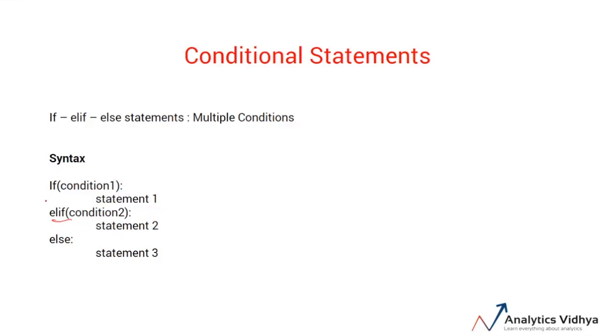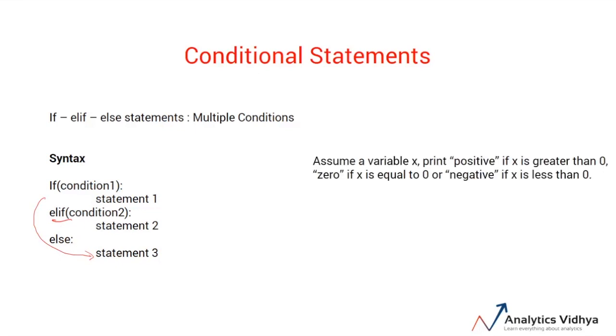If every condition is false, then this statement is executed. Let's look at this problem. Assume that we have a variable x and we want to print positive if x is greater than 0, print 0 if x is equal to 0, and negative if x is less than 0.